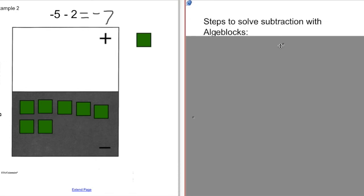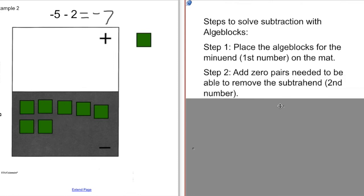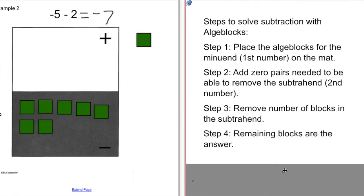So what we have here are the steps that we can use to solve subtraction with algebra blocks. First, we place the algebra blocks for the minuend, the first number on the mat. So we started, we had negative 5 down here. Step 2, add zero pairs needed to be able to remove the subtrahend, or the second number. So I needed to take away 2, but since I didn't have 2, I added zero pairs until I had 2 positive to take away. Step 3 is remove the number of blocks in the subtrahend. So I took away the 2, and then the remaining blocks are the answer. So that was negative 7.